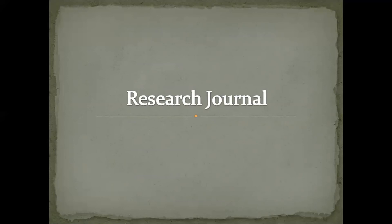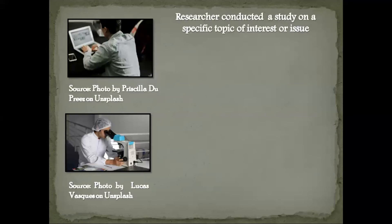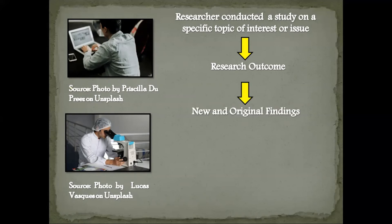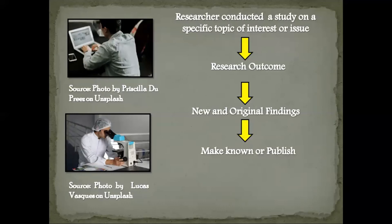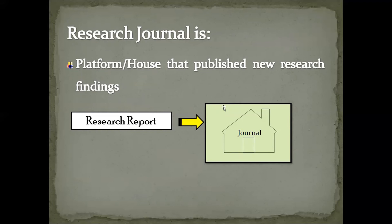Now let's see what research journals are. When a researcher conducts any research study on a particular topic, what is important at the end of the study is the finding. If these findings are new and original in nature, they should be published to the scientific world — because the research findings will fill the information gap and provide additional knowledge and scientific support to existing knowledge. This is where a research journal comes in.